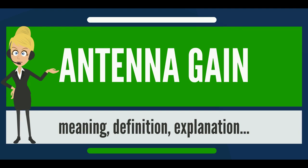For a given frequency, the antenna's effective area is proportional to the power gain. An antenna's effective length is proportional to the square root of the antenna's gain for a particular frequency and radiation resistance. Due to reciprocity, the gain of any antenna when receiving is equal to its gain when transmitting.